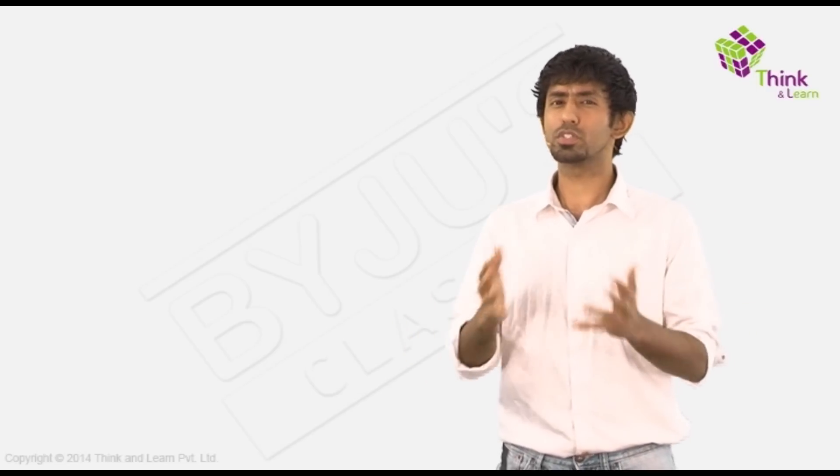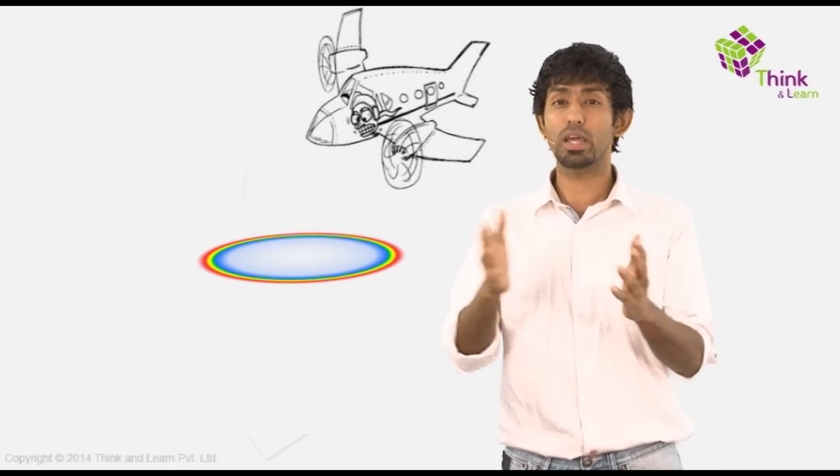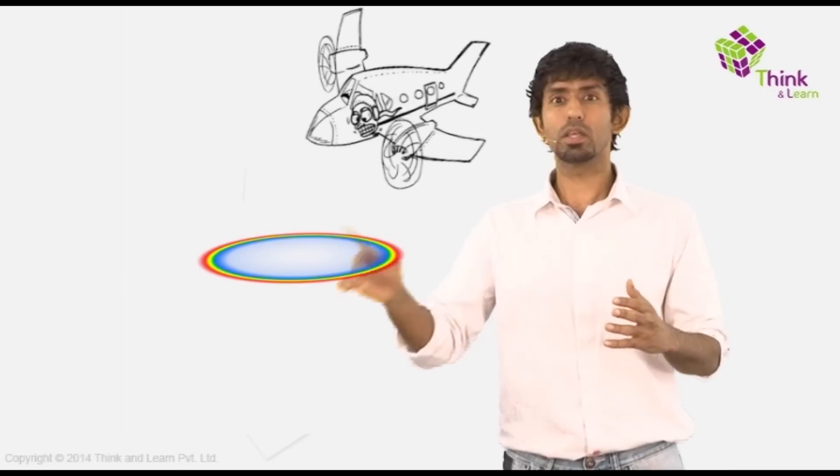First of all, are they semi-circular? Well, the truth is they are not. They are actually circular. If you have been fortunate enough to be able to see a rainbow from the sky in an airplane, you would be able to see that they are fully circular.